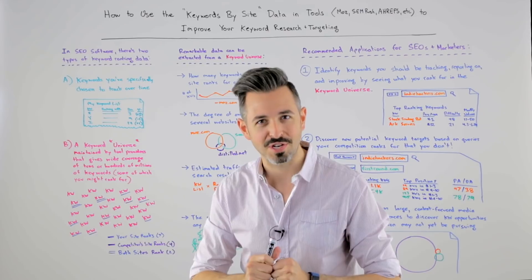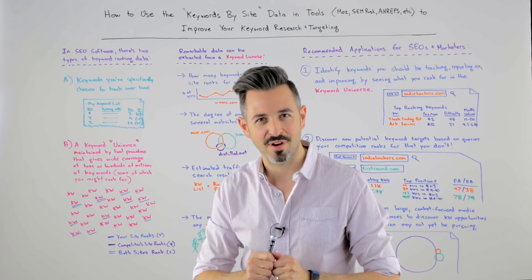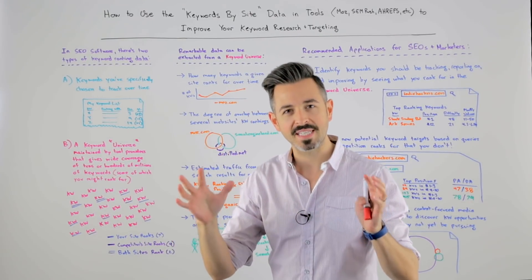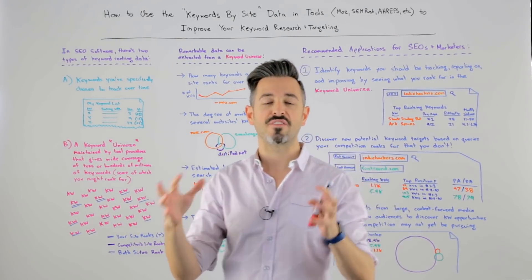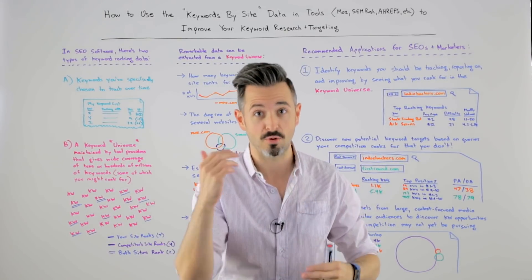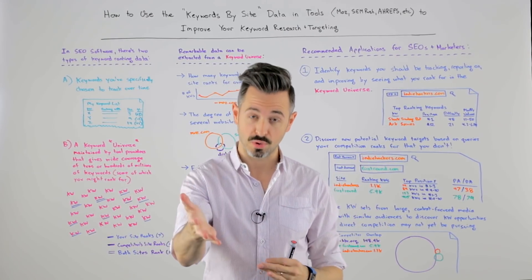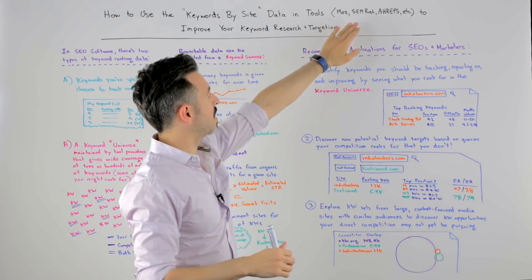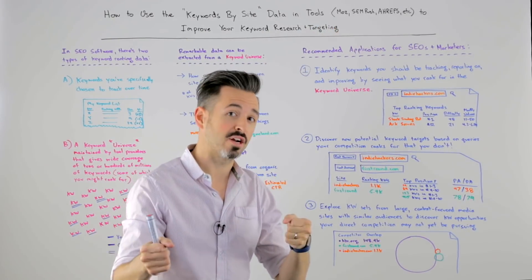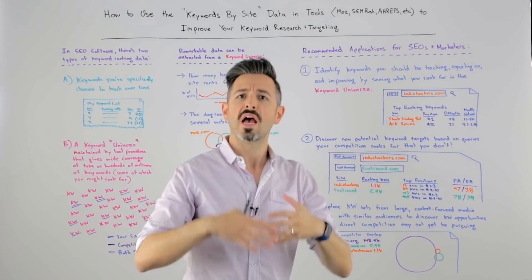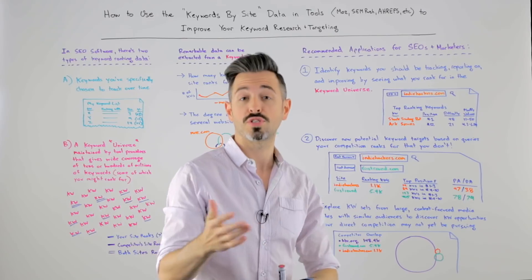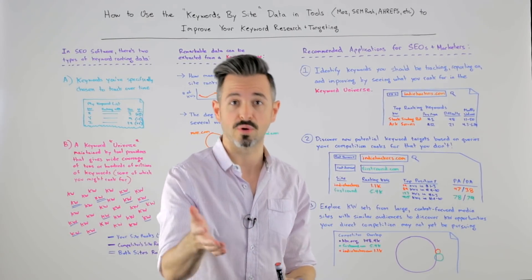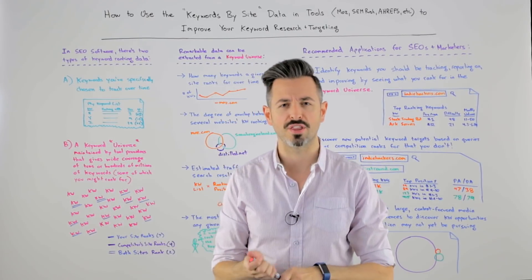Howdy, Moz fans, and welcome to another edition of Whiteboard Friday. This week, we're going to chat about the keywords by site feature that exists in Moz's toolset — we just launched it this week — and in SEMrush and Ahrefs, who've had it for a little while, and there's some other tools out there that also do it, like Key Compete and SpyFu and others.